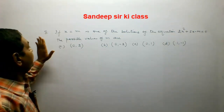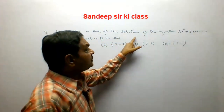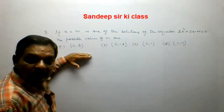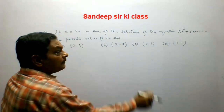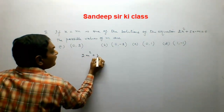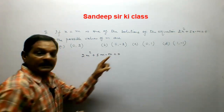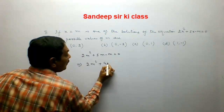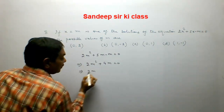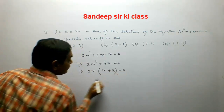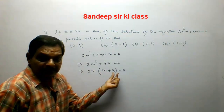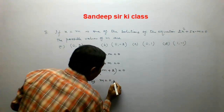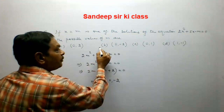Question number 8. If x = m is one of the solutions of the equation 2x² + 5x - m = 0, the possible values of m are given as options. Substituting x = m: 2m² + 5m - m = 0, which simplifies to 2m² + 4m = 0. Taking 2m common: 2m(m + 2) = 0. So m = 0 or m = -2, making option B correct.